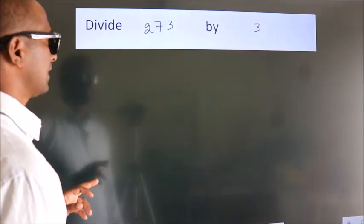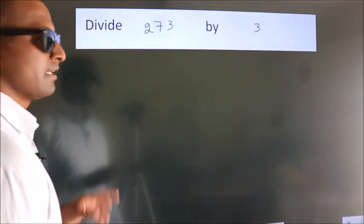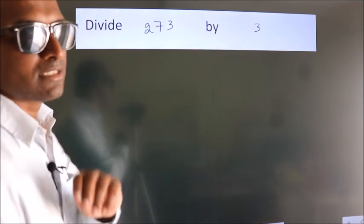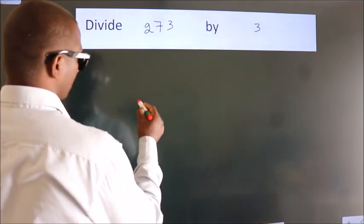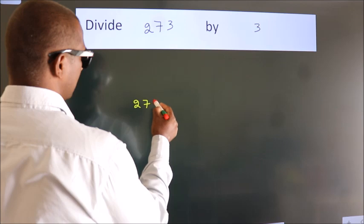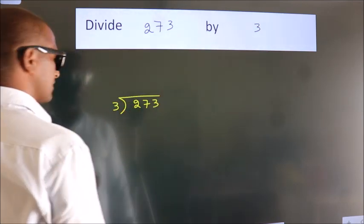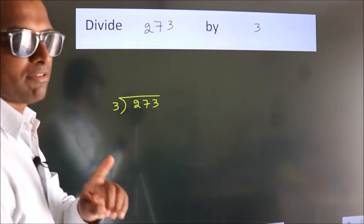Divide 273 by 3. To do this division, we should frame it in this way. 273 here, 3 here. This is your step 1.